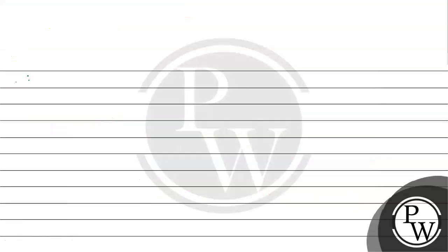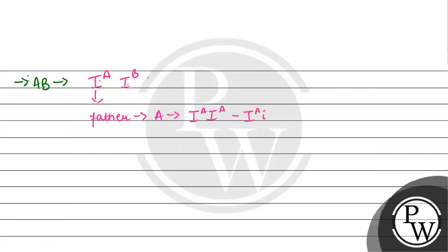Option number A deikh lete hain, which is AB. So AB blood group agar bachche ka hoga, toh uske alleles honge IA and IB. So IA jo hai, woh usko father se milega, because father ka jo blood group hai woh A hai, which means woh ya toh IA IA hoga (homozygous), ya phir woh hoga IA aur small i. IB milega usko from mother, because mother ka blood group hai AB, which means unke paas ek IA hai aur ek IB present hai. Is case mein define nahi ho pa raha hai ki father homozygous hai ya heterozygous hai, because dono hi condition mein father IA provide kar sakta hai.